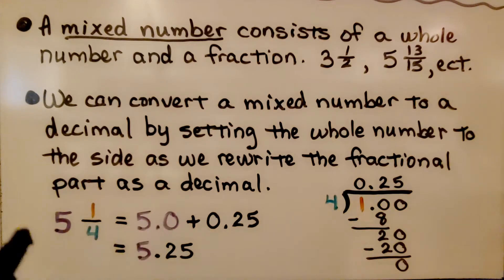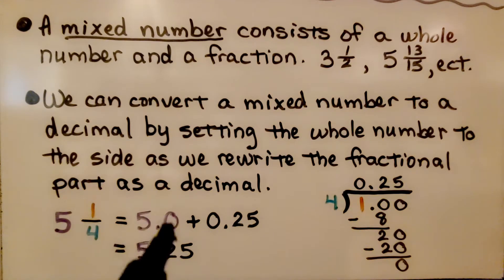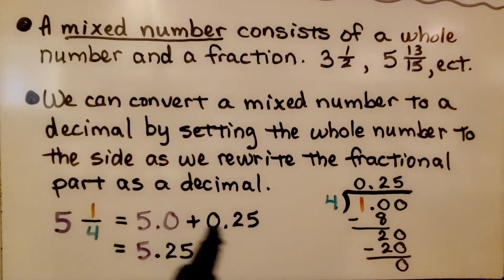We add it to the whole number. We can add a decimal point and zeros so they have the same amount of digits. We get 5 and 25 hundredths.